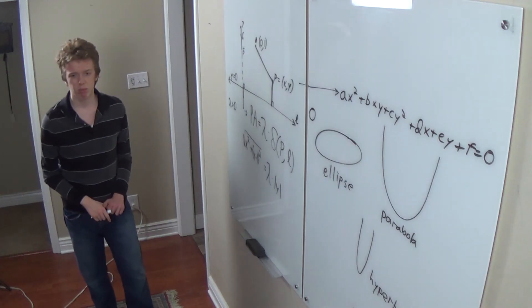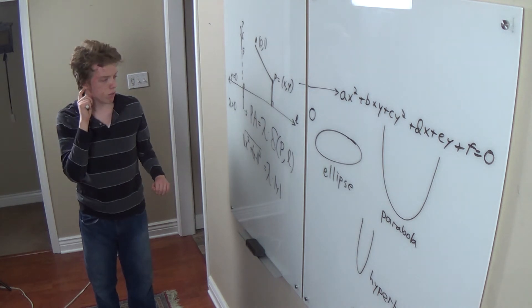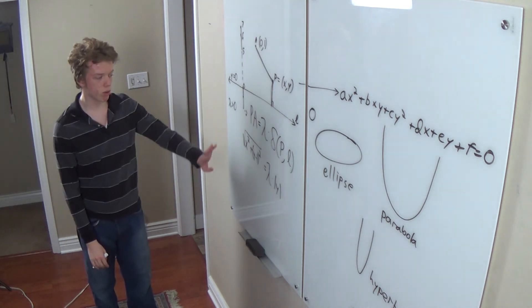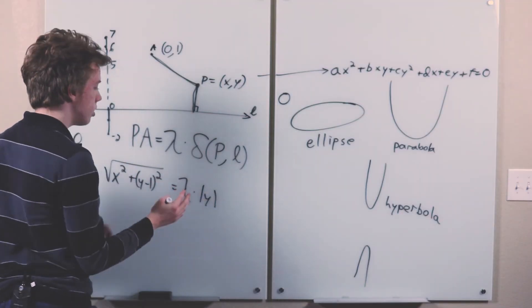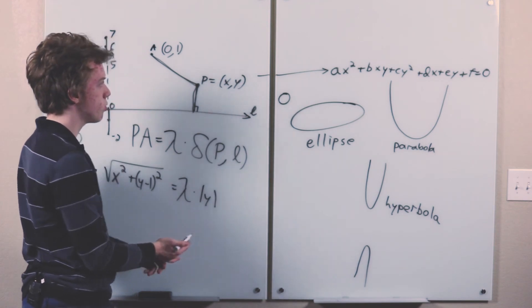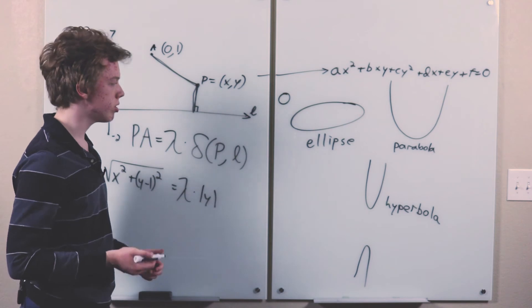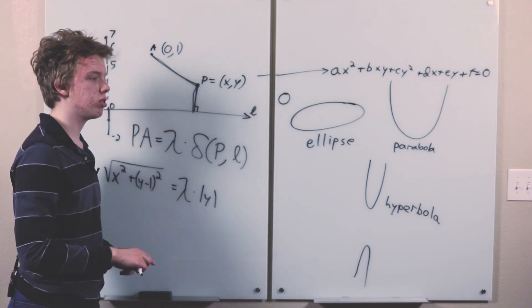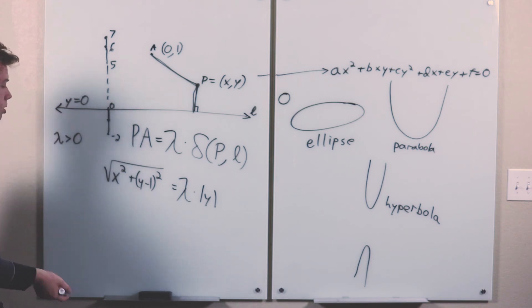And now this looks not very nice, but you can actually make it nice if you square both sides. That gets rid of the square root and the absolute value signs. And the reason that we can do this is because both sides are non-negative, and two non-negative real numbers are equal if and only if their squares are equal, as can be arrived at with a little bit of thought.